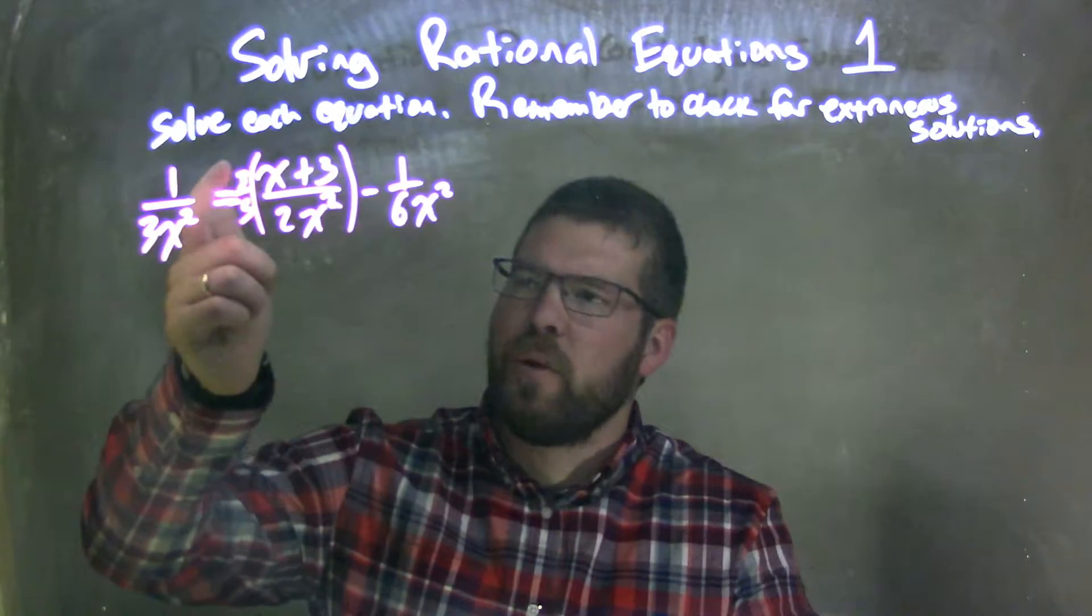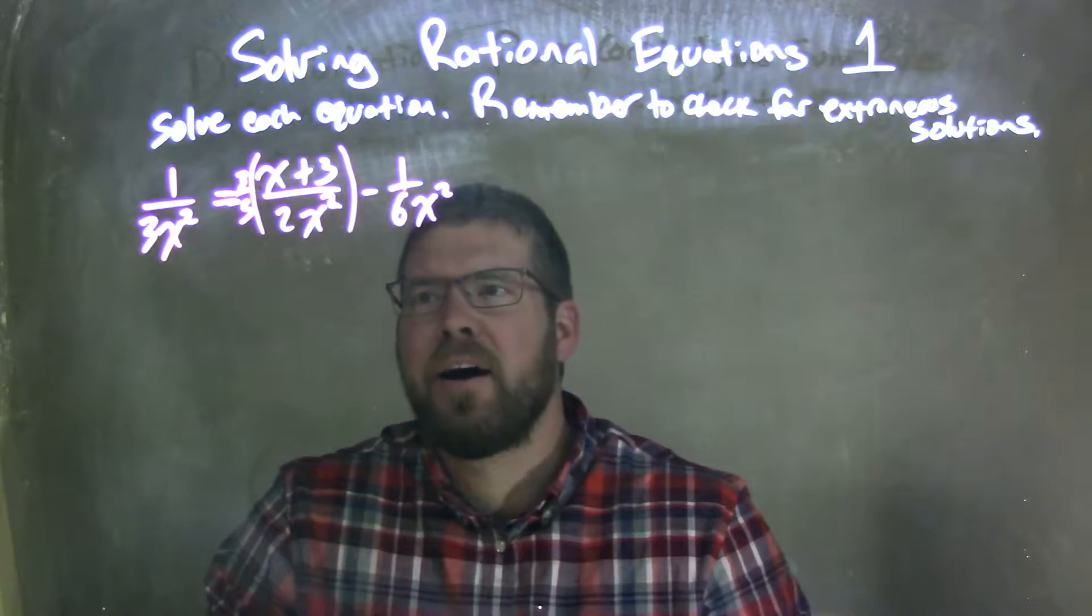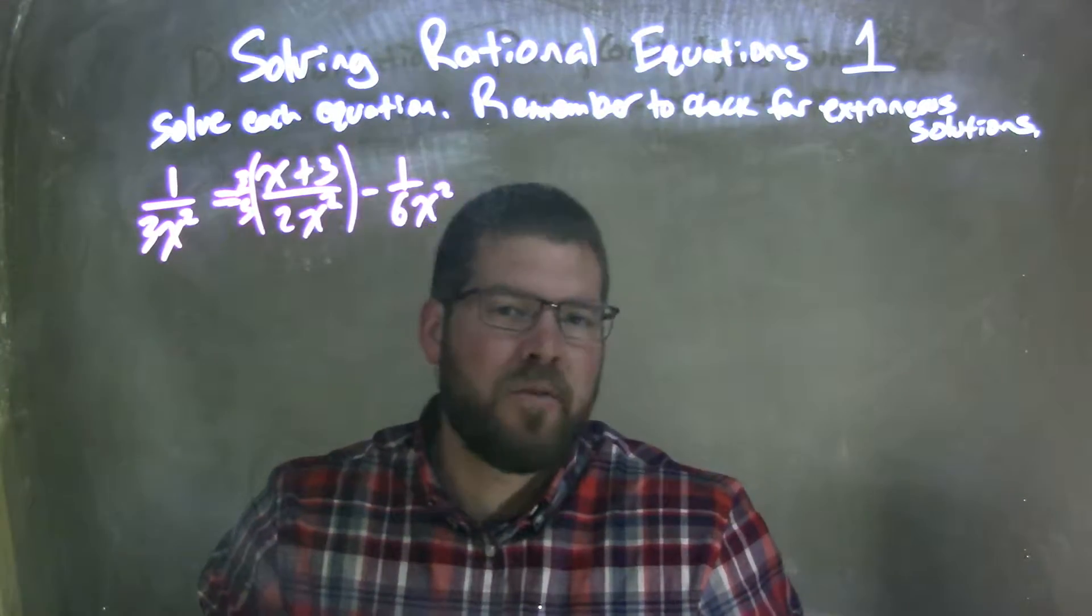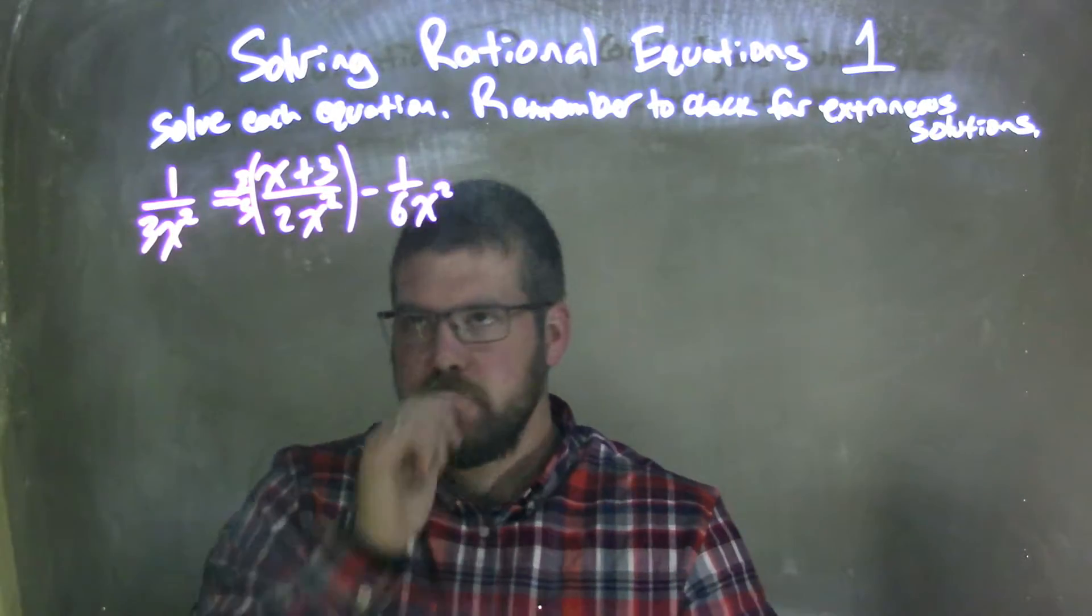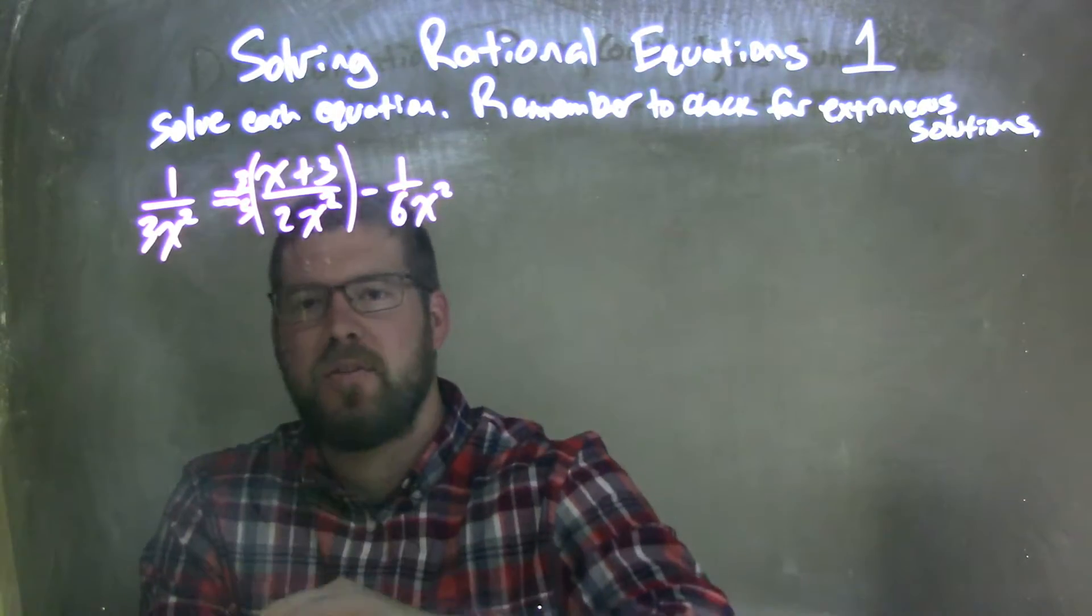I put 3 on the numerator because 3 divided by 3 is 1. And multiplying anything by 3 over 3, which is just 1, doesn't change the term itself.